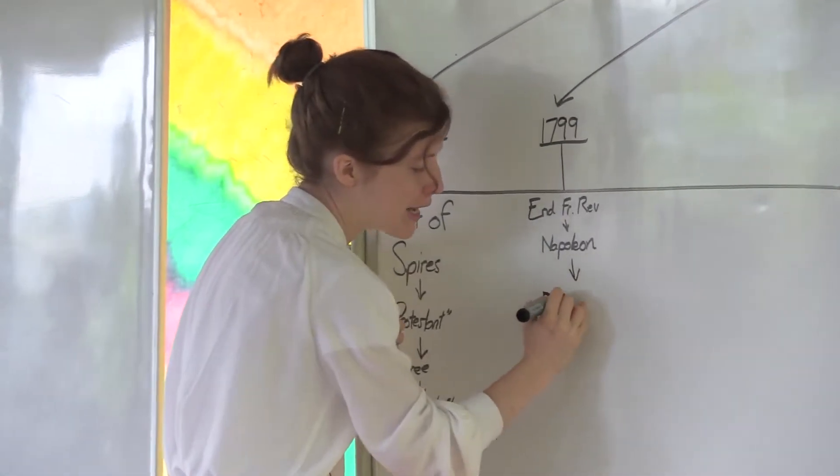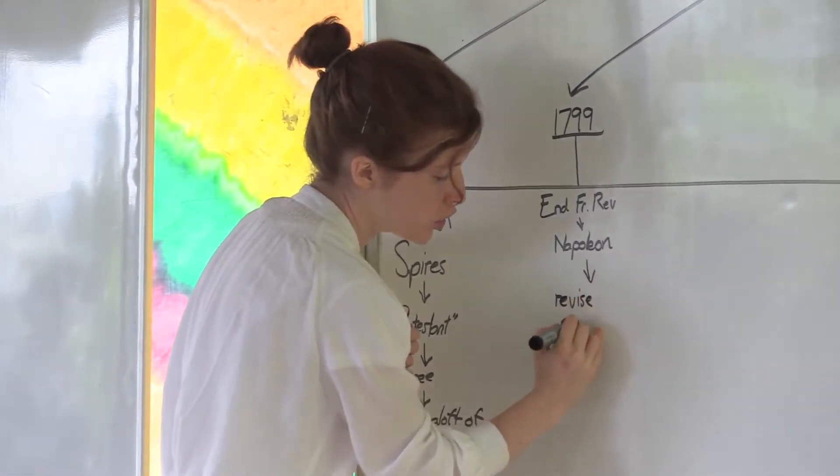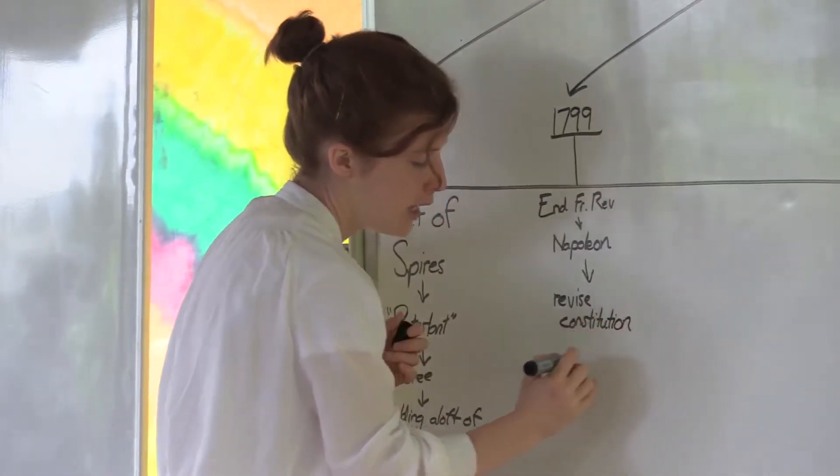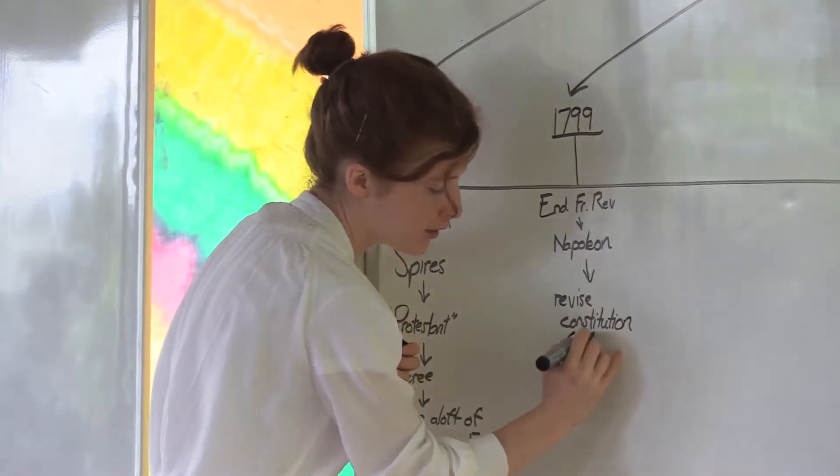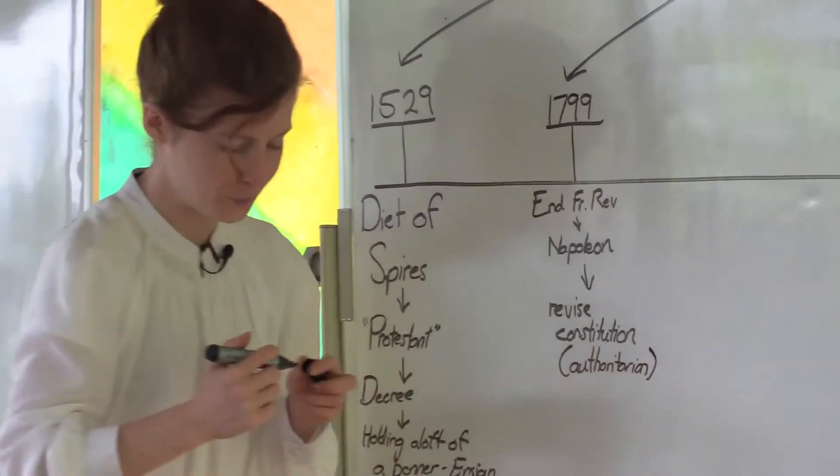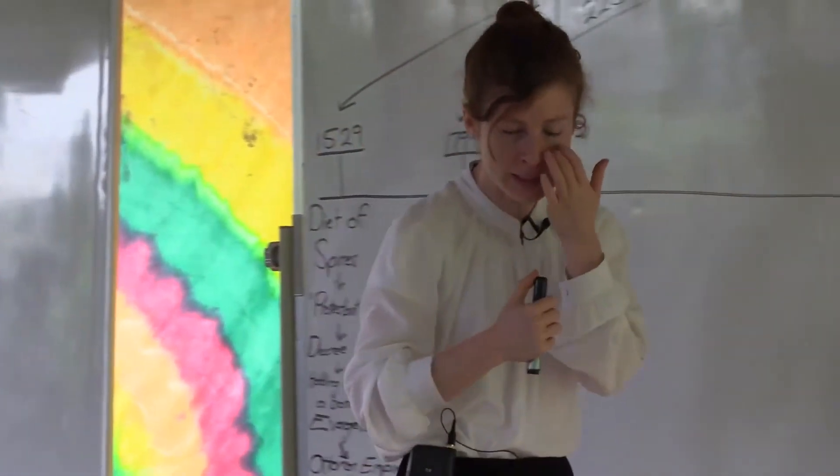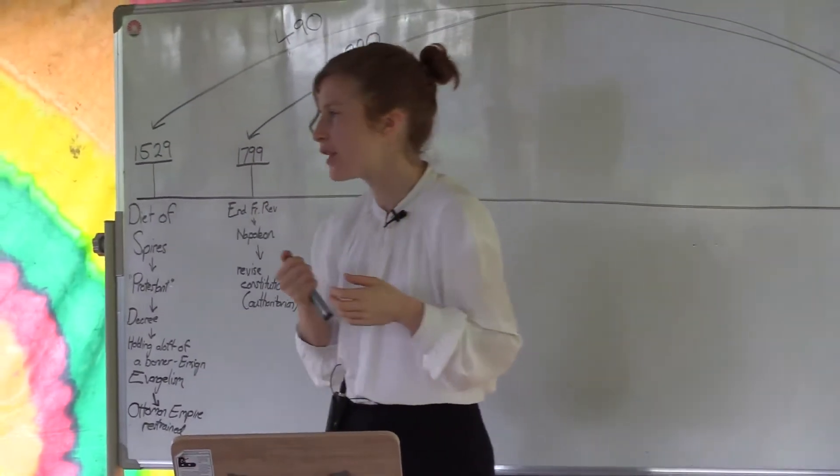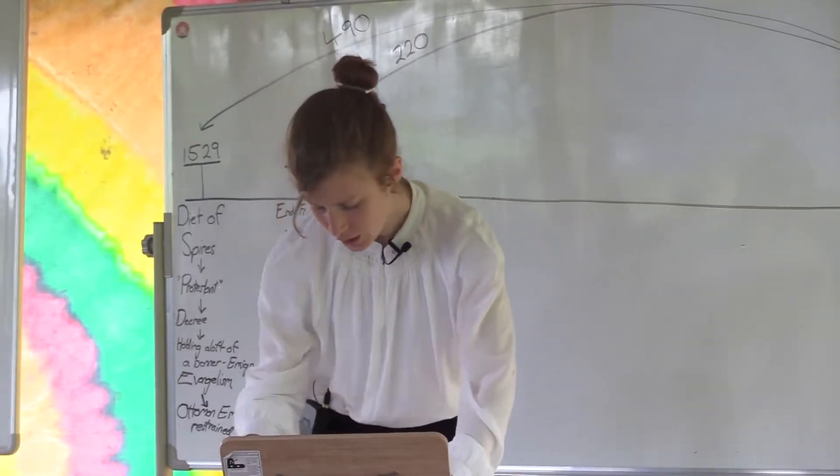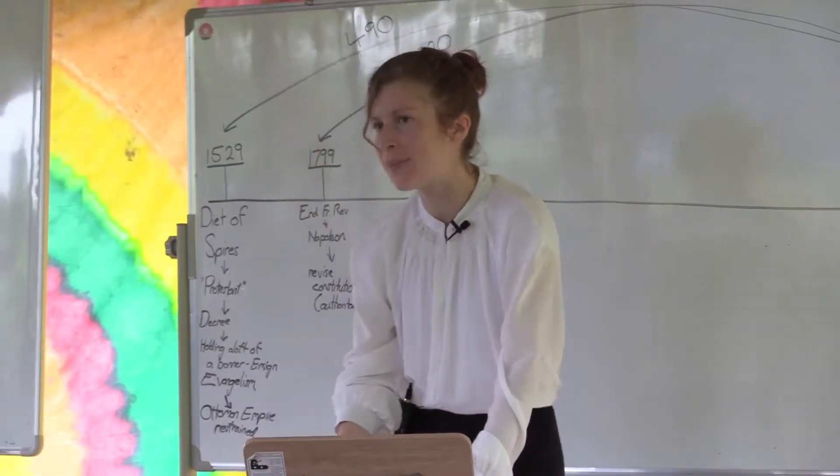Napoleon ends the French revolution but they also begin to do one other thing, and that is they revise the constitution in a much more authoritarian manner. This is an attack on their French constitution to coincide with the setting up of a dictator.